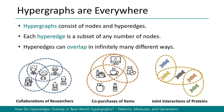What is a hypergraph? Hypergraphs consist of a set of nodes and a set of hyper-edges. They can be found in many different areas including collaborations of researchers, co-purchases of items, and joint interactions of proteins. Each hyper-edge is a subset of any number of nodes, and due to its size flexibility, hyper-edges can overlap in infinitely different ways.